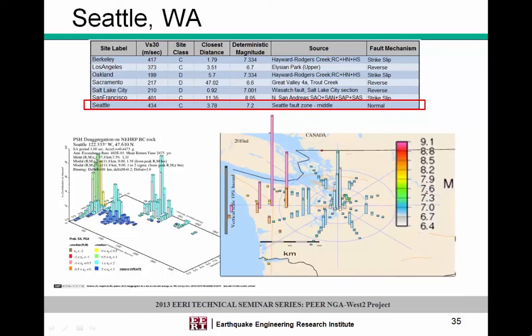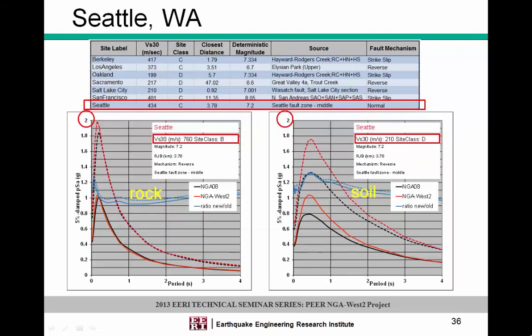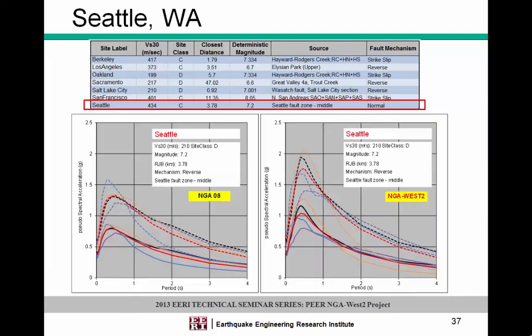Seattle gets interesting because the comparison is limited — the hazard is controlled by the subduction zone event. But looking at the Seattle Fault Zone source, which is less than four kilometers away, we see something similar to before: rock values haven't changed significantly, but there's a significant increase in spectral accelerations in the short-period range for soil conditions.